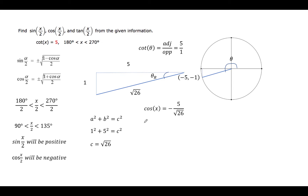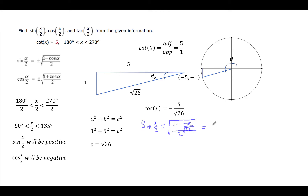So let's start with the sine of x over 2. The formula is the square root of 1 minus the cosine of x, all divided by 2, where the cosine of x is negative 5 over the square root of 26. We could factor a one-half out of this, so under the radical we would have one-half times 1 plus 5 over the square root of 26.